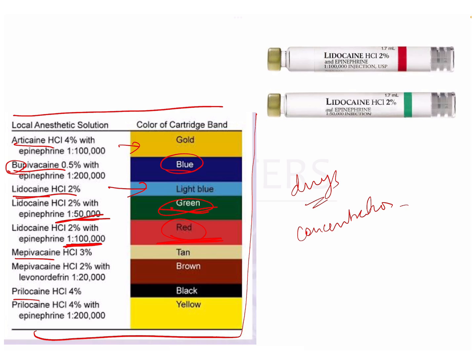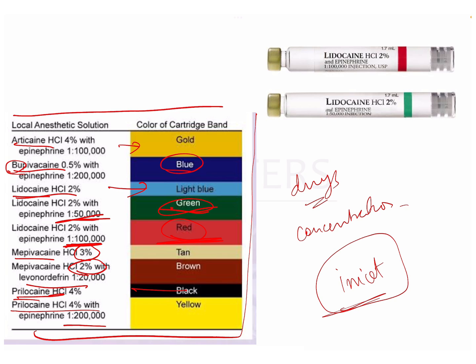Make some memory code to easily memorize these, because this is an important question that can be asked in any exam. Mepivacaine plain is 3%, mepivacaine 2% with levonordefrin is definitely black, and mepivacaine with 1:20,000 or 1:200,000 epinephrine is yellow. This is something we have to memorize — there is no other way.